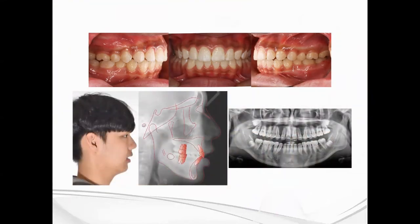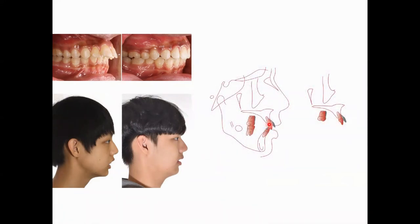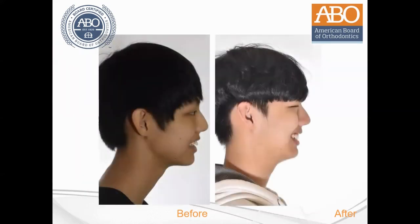The profile is nice and the occlusal relationship is also good. This is a comparison of cephalometric X-rays before and after treatment. As a result of upper molar distalization, the large overjet is corrected. The treatment period was 21 months. Maxillary protrusion was improved and his mother was very happy with the result. This is one of my board cases.